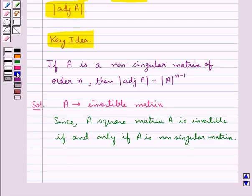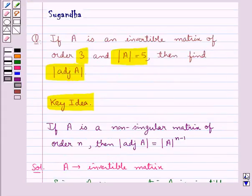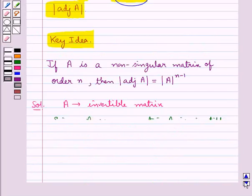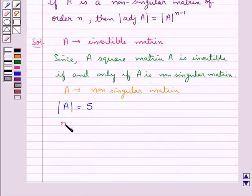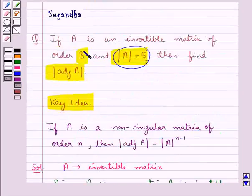this means that A is a non-singular matrix. We are given that |A| = 5 and n, the order of matrix A, is 3.